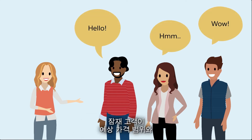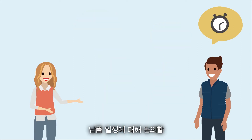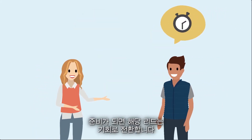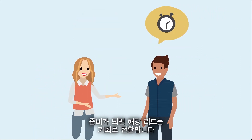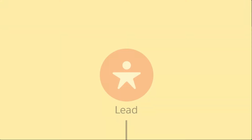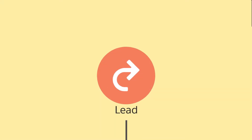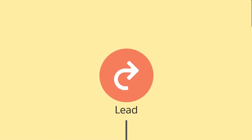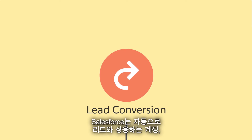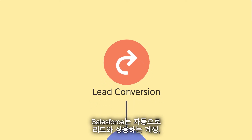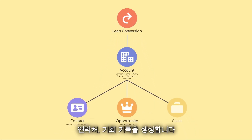Once a prospect is ready to discuss potential pricing, scope, and delivery dates, you convert that lead into an opportunity. When you convert a lead, Salesforce automatically creates the corresponding account, contact, and opportunity records.